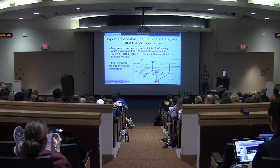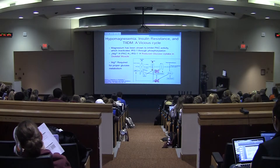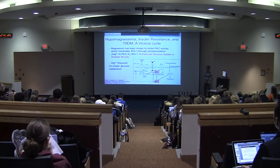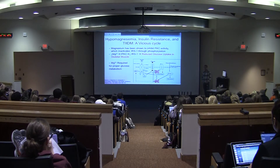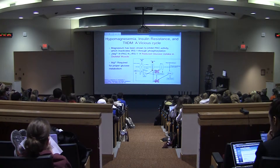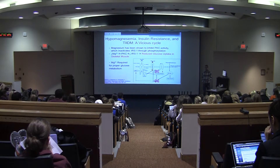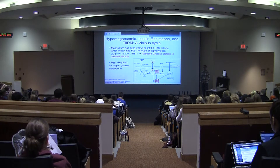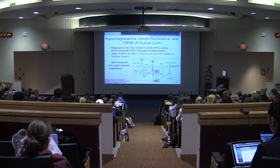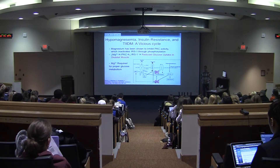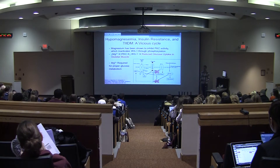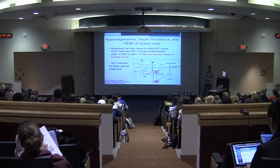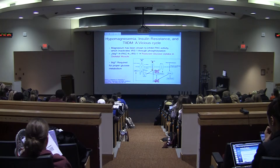With magnesium being involved in every step of glucose metabolism, you can start to see how hypomagnesemia can be involved in insulin resistance, though the relationship isn't quite as straightforward as you might think. One of the ways is that magnesium has been shown to inhibit PKC. PKC is actually an inhibitor of IRS-1, which is insulin receptor substrate 1 — the receptor mediator when insulin binds to the cellular receptor. When you have low magnesium status, you won't have that magnesium-induced inhibition of PKC, so PKC will be overactive with increased activity.